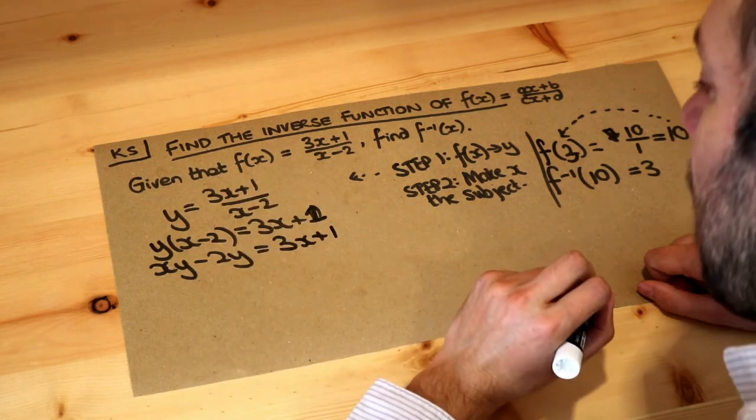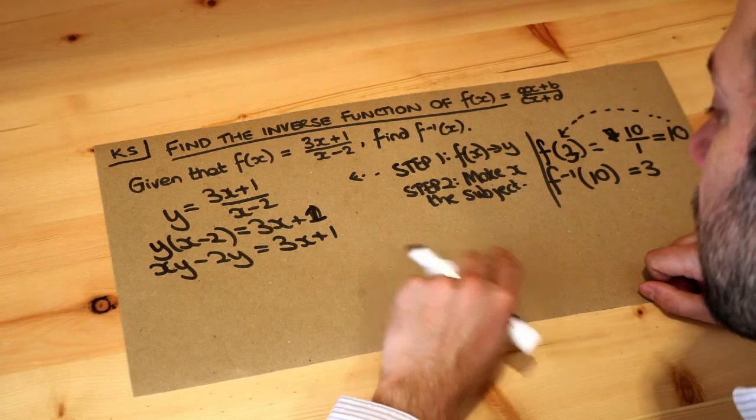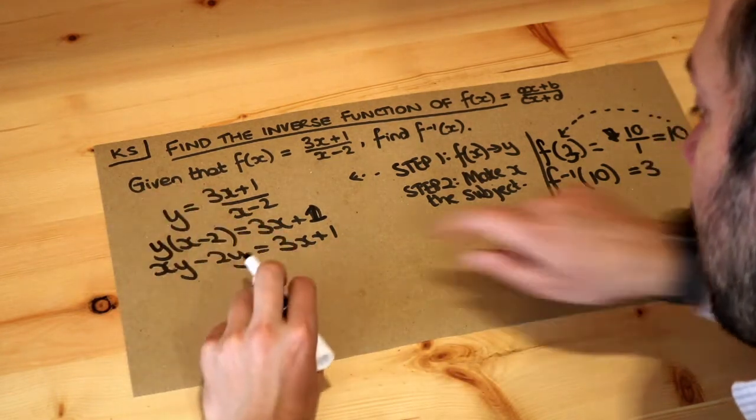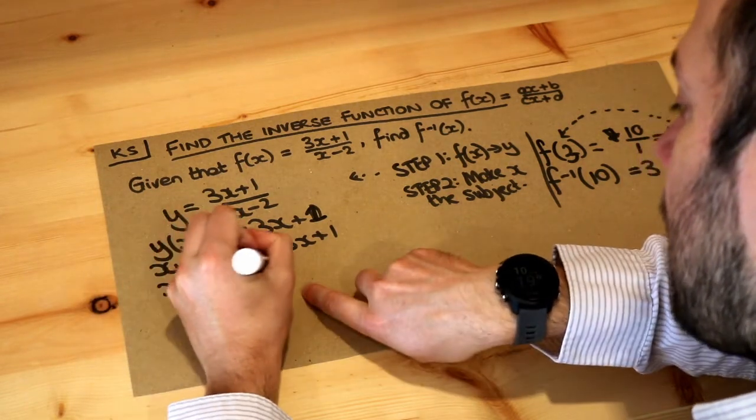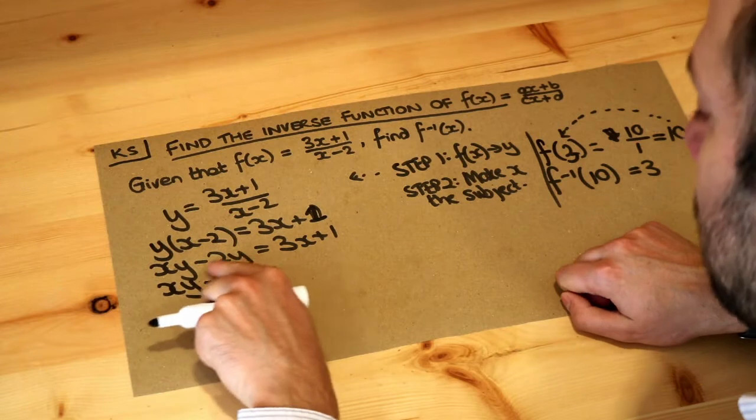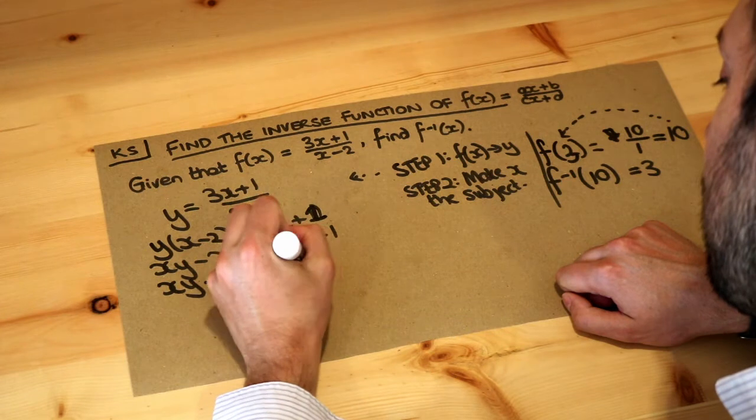And then do you remember we have to get all the x terms on one side of the equation. So I'm going to get all the x terms on the left so I'm going to minus 3x, so we're going to have xy minus 3x. And at the same time I don't want this minus 2y here because it's not an x term, so I'm going to add 2y to both sides to move it to the other side.